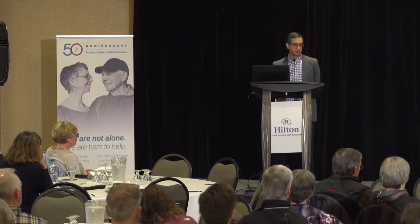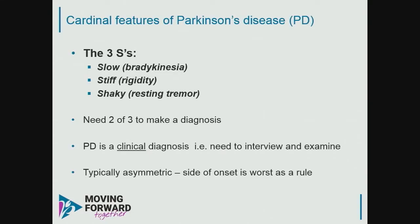In terms of the cardinal features, I tell students and residents to look for the three S's. People with Parkinson's are slow — or have bradykinesia — they're stiff, or have rigidity, and they're shaky, classically a resting tremor. To make a diagnosis, you need two out of these three. Parkinson's is a clinical diagnosis: you can't send someone to the lab or for a scan and say they have Parkinson's. It takes time to interview and examine someone. Parkinsonian features are also very common as you get older — prevalence increases from about 15-20% in those aged 65 and above to over 50% in those aged 85 — that doesn't mean they all have Parkinson's disease.